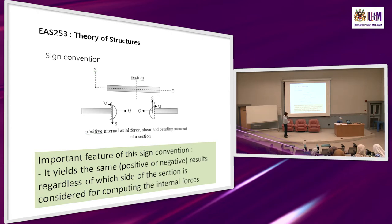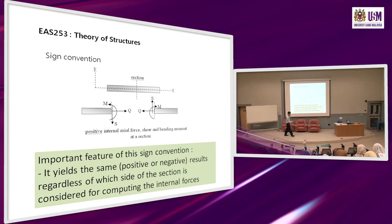Consistent sign convention means: the shear force S drawn on the left part points downward, and on the right part it points upward. For axial force, on the left it points away to the left, and on the right it points away to the right. The bending moment is counterclockwise on the left and clockwise on the right. It is very important that these are in the proper sign convention.